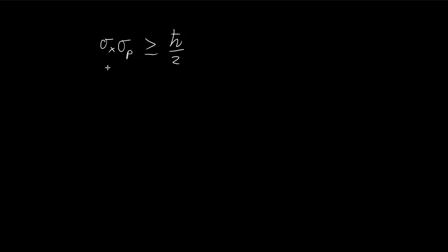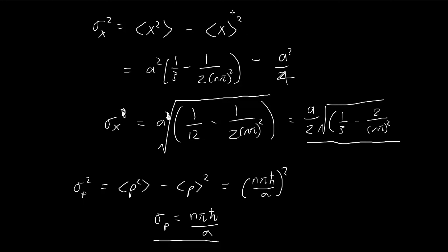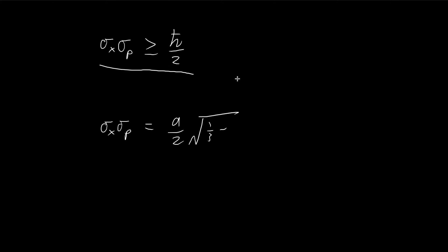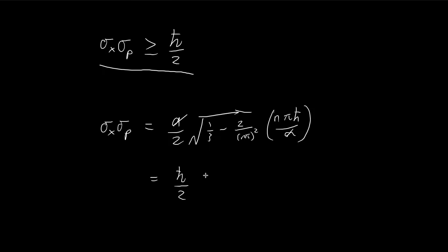Now we're going to test the Heisenberg uncertainty principle. The Heisenberg uncertainty principle tells us that σx·σp ≥ ħ/2 is always true. Let's verify this for the infinite square well. The standard deviation of x, copied down, is proportional to one-third minus 2 divided by (nπ)². The standard deviation of p is nπħ/a — the a's cancel. Keeping ħ/2 outside, the n and π terms get multiplied inside the square root. We want to check if this is always larger than ħ/2. We check for n=1, which is the smallest case.